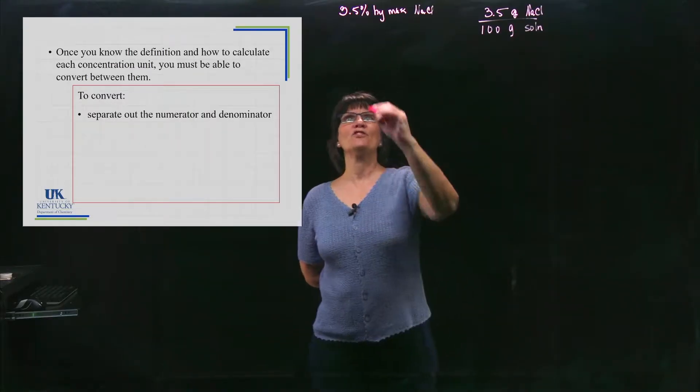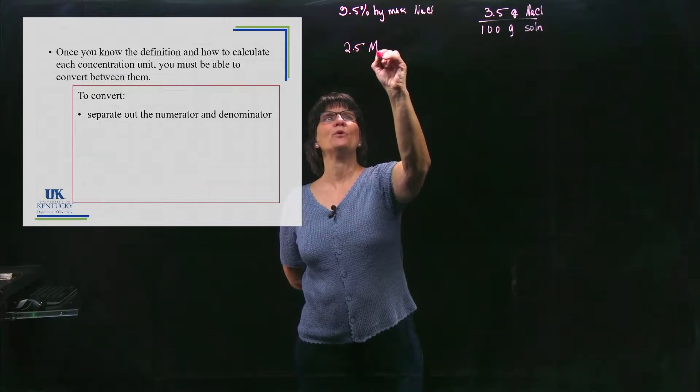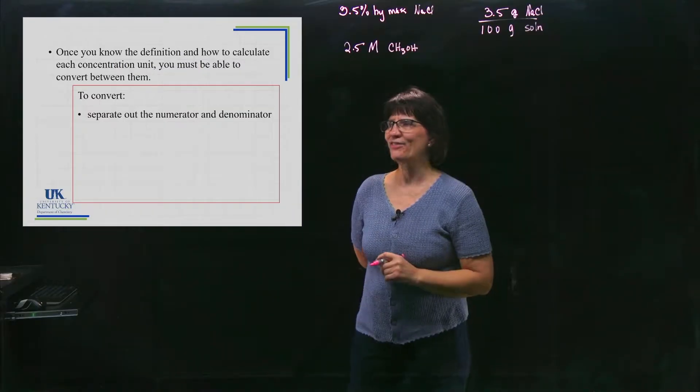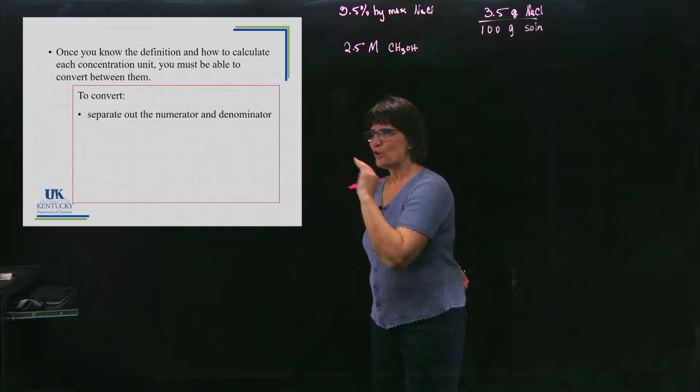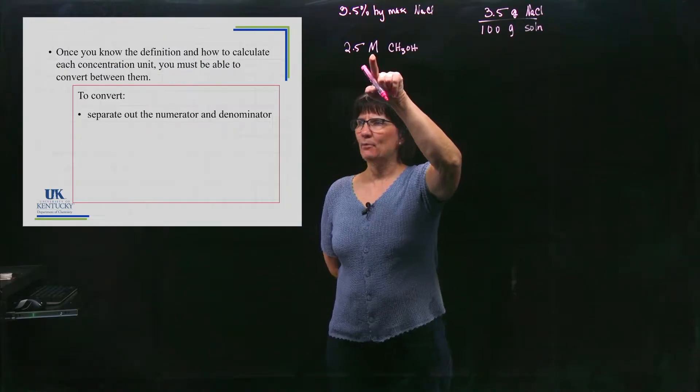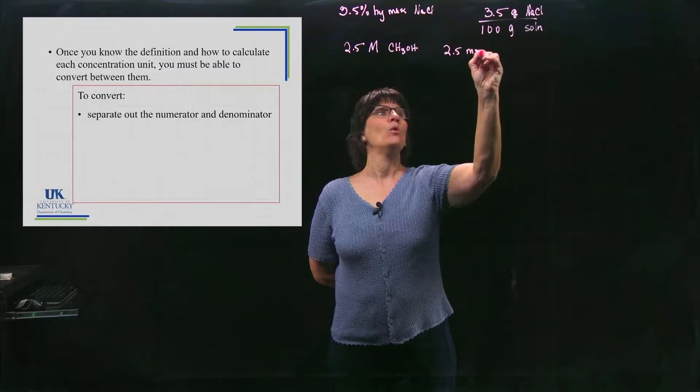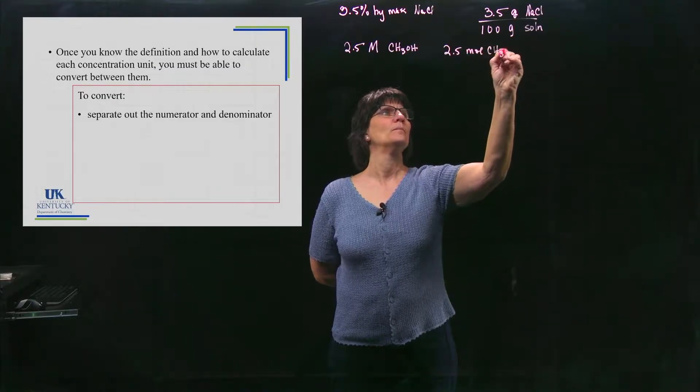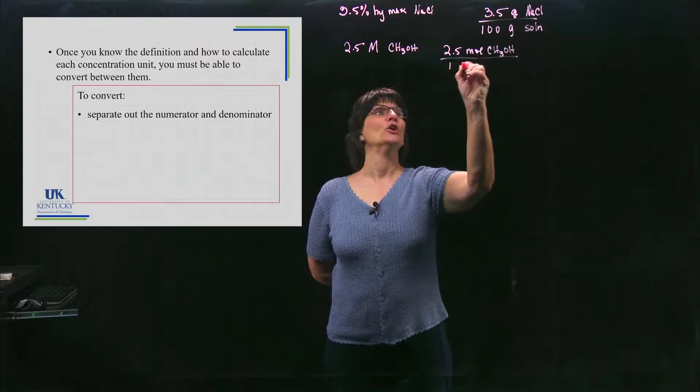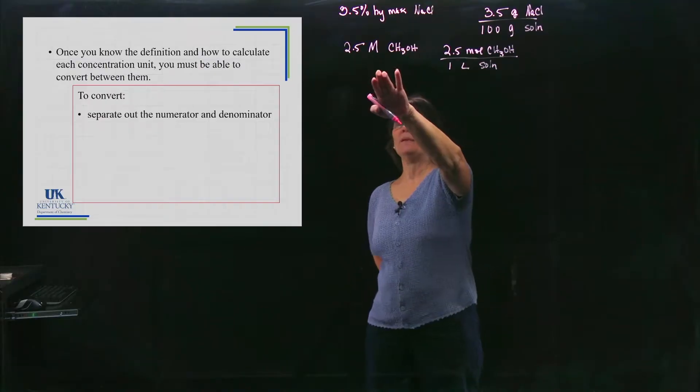Let's say we have a solution that says it's 2.5 capital M CH3OH, and we want to write that as a numerator and a denominator. Well molarity is what a capital M is, and so it's 2.5 moles of the solute per liter of solution. One liter. So that's what molarity means - the moles in a liter of solution.